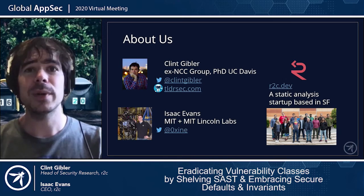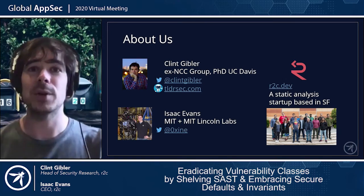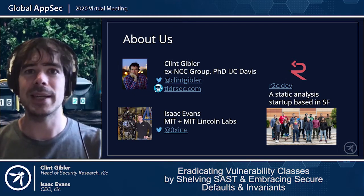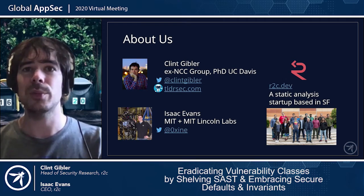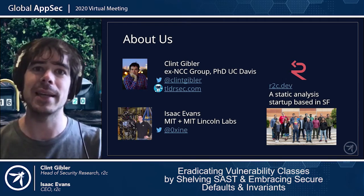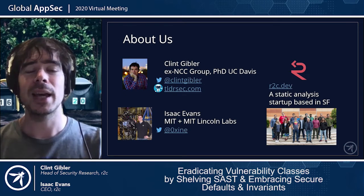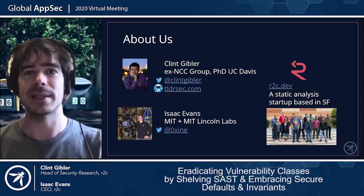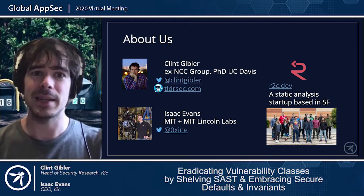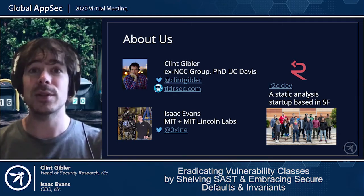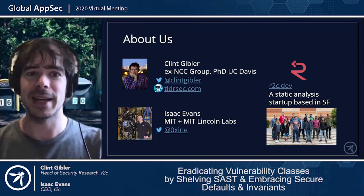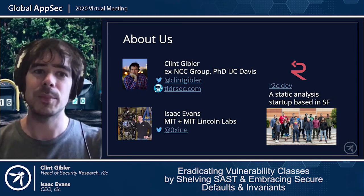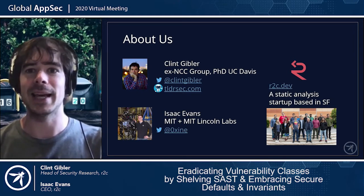A little bit about us. My name is Clint. I'm currently the head of security research at R2C. Before that, I was a research director and technical director at NCC Group, a global consulting firm where I did pen testing and helped companies scale their security with security automation and DevSecOps practices. Before that, I was a grad student at UC Davis. Today I'm joined by Isaac, one of the co-founders and CEO of R2C, previously at MIT and MIT Lincoln Labs.